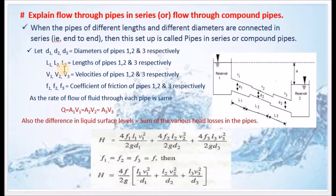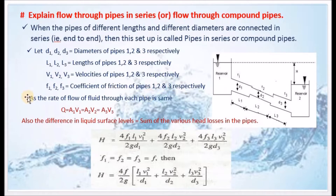L1, L2, L3 are the lengths of the pipes. V1, V2, V3 are the velocities in each pipe. F1, F2, F3 are the coefficients of friction of pipes 1, 2, and 3 respectively.